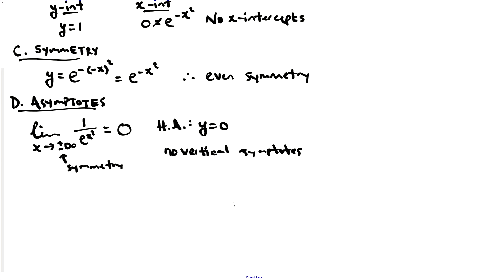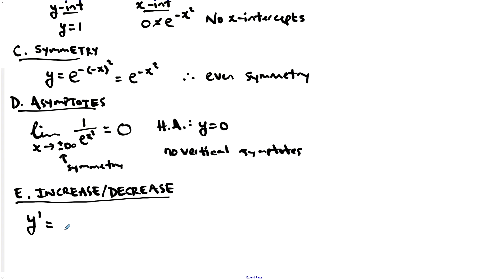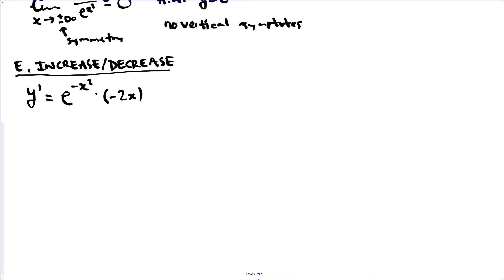Now let's find intervals of increase and decrease, for which we need the first derivative. y prime equals e to the negative x squared times the derivative of the exponent, which is negative 2x. Rewriting: negative 2x is in the numerator and e to the x squared is in the denominator. There are no non-permissible values, so we set it equal to zero. The denominator gives nothing, so it's just the numerator that gives us x equals zero.